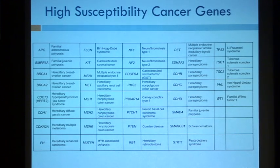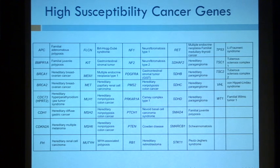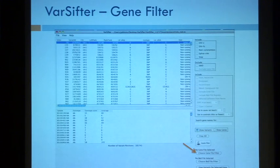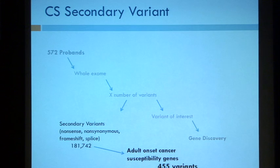The first thing we do iteratively is look at certain diseases. We looked at genes known to cause high-susceptibility cancer syndromes — a list of 37 genes taken from Lindor et al., all known to cause cancer syndromes in adults. Our cohort is 45 to 65 years of age, so we focused on adult onset cancers. You can feed a gene list into VarSifter and filter based on that, getting us down to 455 variants — still a big number if you look at each one, but much more manageable than 182,000.